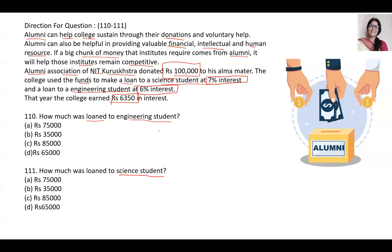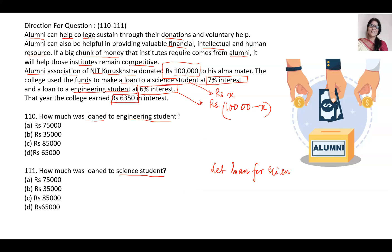Both questions can be answered together in one go. Let the amount loaned to the science student be Rs. x. Since the total is 1 lakh, the amount loaned to the engineering student will be Rs. (1 lakh minus x). So we will set up the equation accordingly.